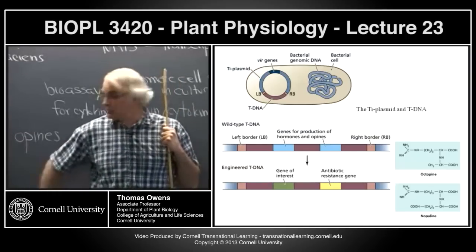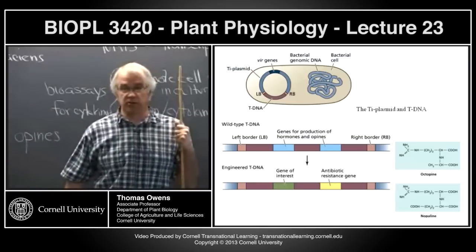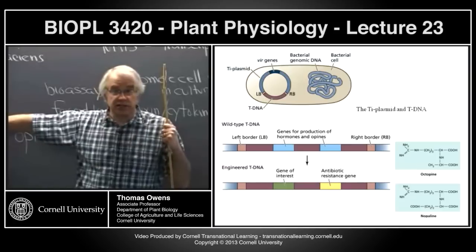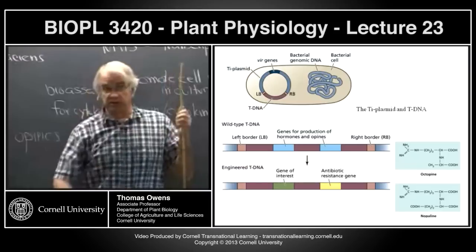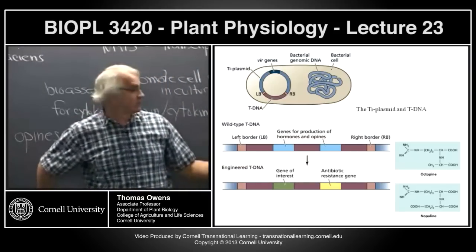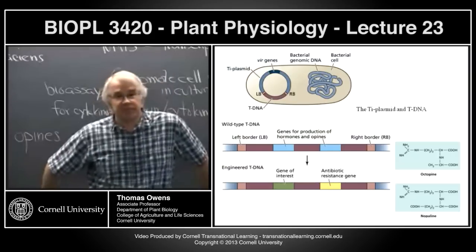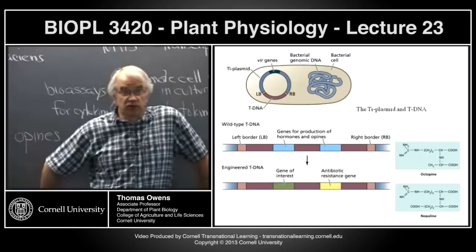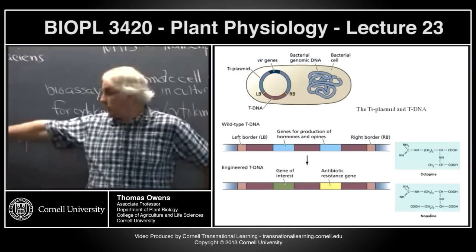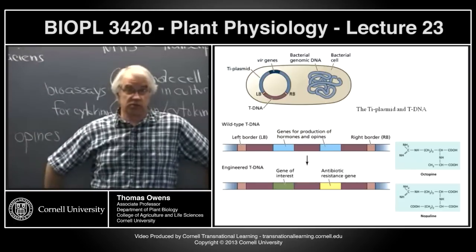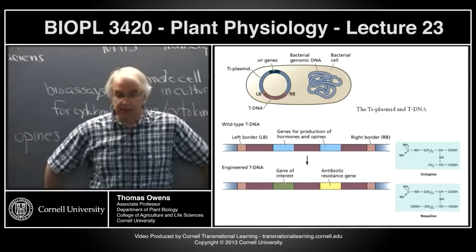That same pair of hormones functions synergistically in regulating cell division. In the meristems, you need both for cells to be able to divide, even though you need different ratios to control root versus shoot development. A student asks if concentration plays a role — yes, concentration plays a role, and the relative concentrations of each hormone also matter.